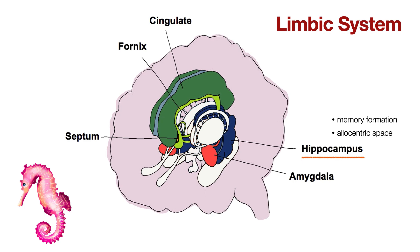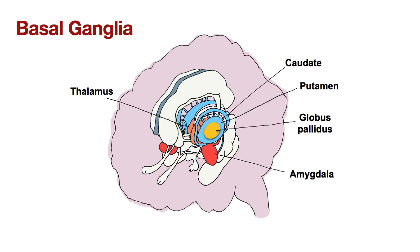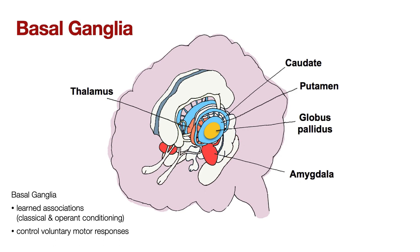Next, let's take a look at the other subcortical system, the basal ganglia. The basal ganglia help us form associations between our actions or other events around us and certain environmental stimuli. You may have learned about classical and operant conditioning, such as with Pavlov and his drooling dog, where he conditioned the dog to drool to the sound of a bell — that would be mediated by the basal ganglia. They also help us control our voluntary motor responses, including skeletal muscle movement and eye movements. The amygdala is part of both the limbic system and the basal ganglia. Another important basal ganglia structure is the thalamus, a key brain structure for sensation and perception that acts as a relay station for most sensory information.